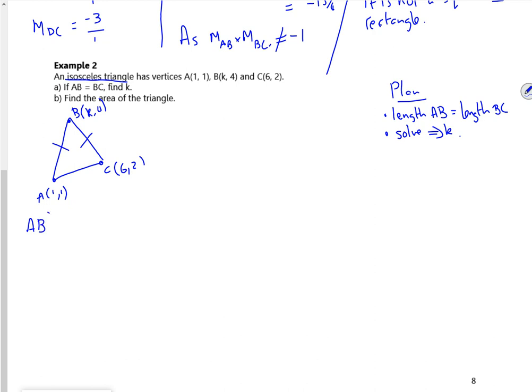So I'm going to do AB squared to make it easier. So it's the difference going up, so it's 1 to 4, so it's 3 up. And the difference going across, so that's K minus 1 squared. So AB squared will be 9 plus K squared minus 2K plus 1. So AB squared is going to be K squared minus 2K plus 10.